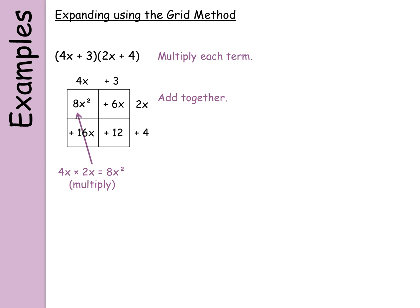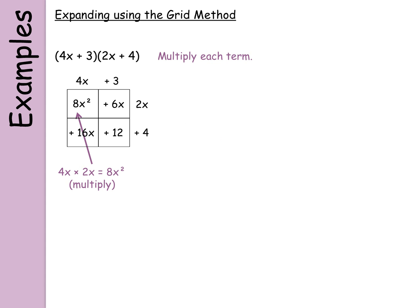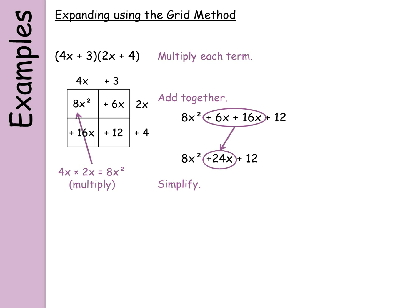As before, add together all the terms: 8x squared plus 6x plus 16x plus 12. Then simplify by collecting my x terms together — that gives me a final answer of 8x squared plus 24x plus 12.